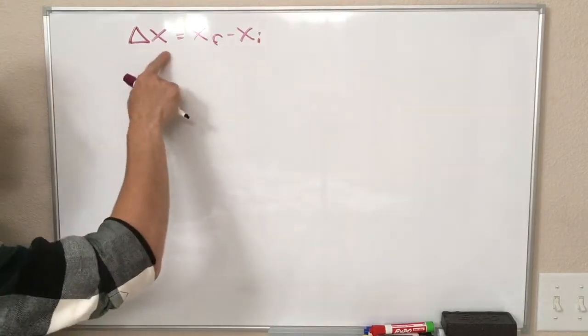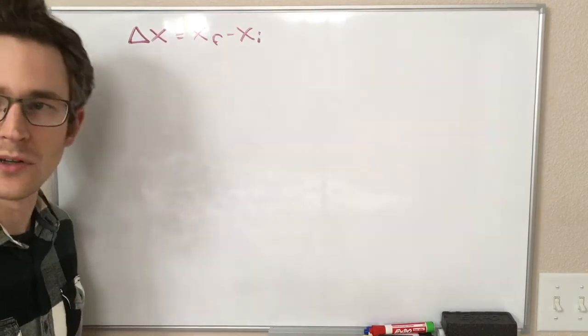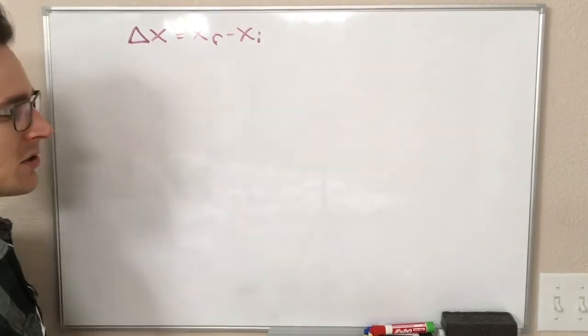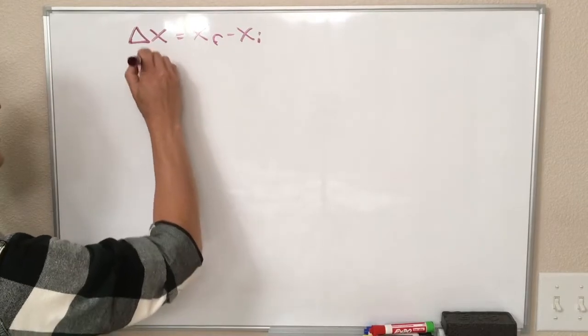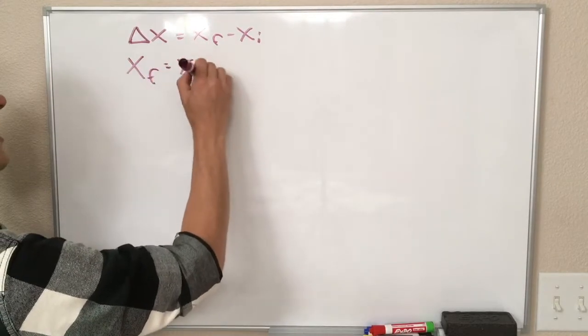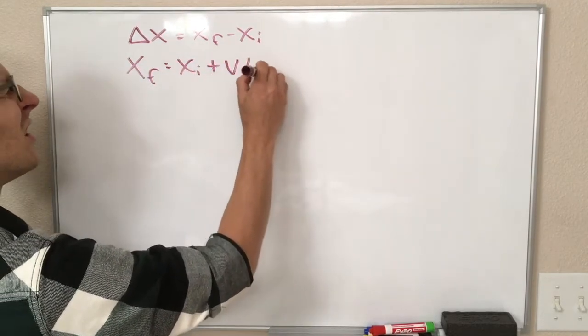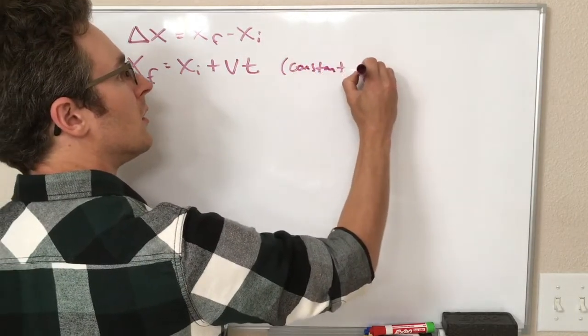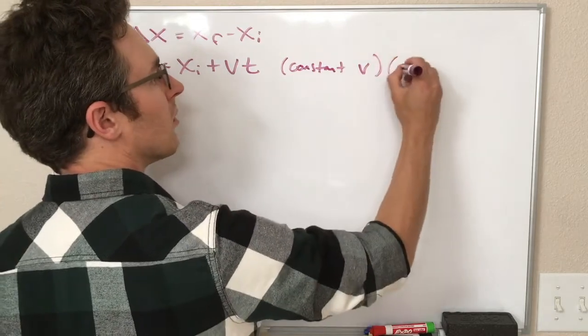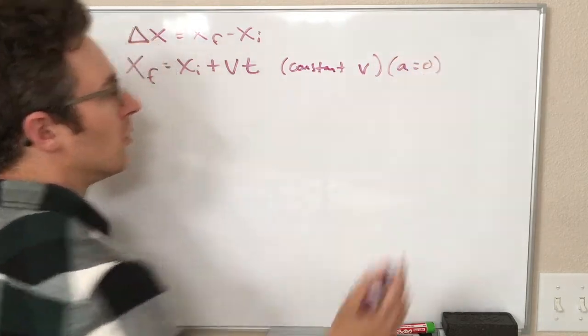And of course, delta any variable equals that variable final minus that variable initial. We could use that for velocity. Also, we have this equation for position x-final is equal to x-initial plus vt. And this equation is only good for constant velocity, or in other words, no acceleration.